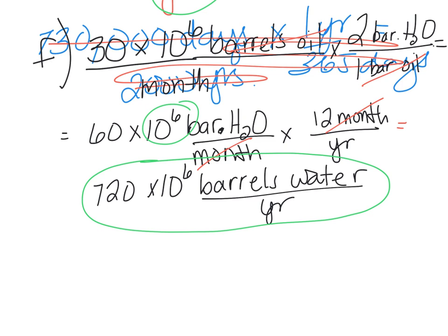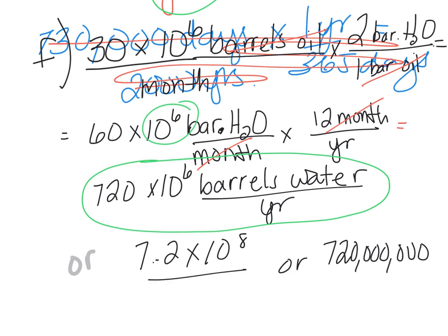You could change it to correct scientific notation, which is 7.2 times 10 to the 8th barrels of water per year. Or you could even write it all out, 720... So again, put the units in. I didn't write the units here, but you need to have the units in. So any of these forms are actually accepted as answers.